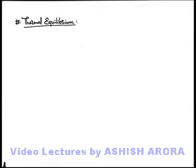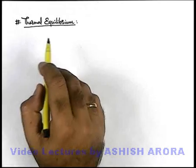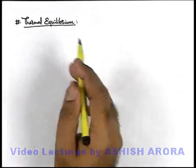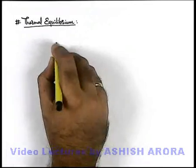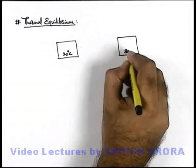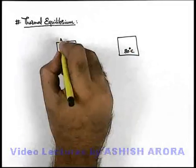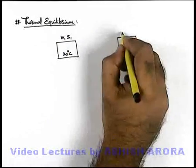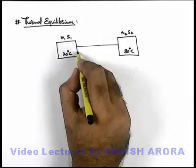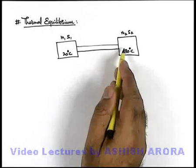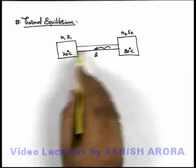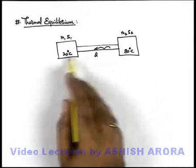Let's begin the new topic of laws of thermodynamics, which starts with the concept of thermal equilibrium. When there are two bodies at different temperatures — one is at 20 degrees centigrade and the other is at 80 degrees centigrade — with mass and specific heat m1s1 and m2s2 respectively, if the two bodies are connected by a thermally conducting media, heat flow will take place from the high temperature body to the low temperature body until their temperatures become equal.